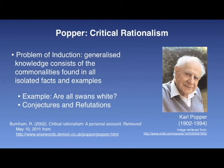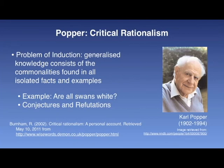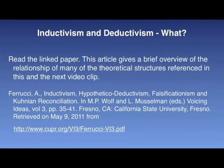The suggested solution to this problem is to make use of both inductivist and deductivist processes. This is done by proposing hypotheses or conjectures, as Popper termed them, and then to invite their refutation. If the hypotheses are refuted — that is, falsified — they can be crossed off of the list of possible explanations for the phenomenon. This process is significantly different from the empiricist's viewpoint, as proof is not required. Popper would contend that proof doesn't really exist anyway, and instead of proving a hypothesis, it is falsified. The reference for the theory part of this — inductivism and deductivism — is the same paper used for the last video clip: Ferrucci, inductivism, hypothetical deductivism, falsificationism, and Kuhnian reconciliation. The clip link will be given in WebCT.